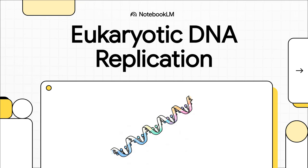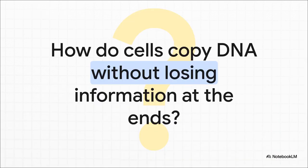In this explainer, we are diving deep into one of the most incredible, most elegant processes in all of biology: eukaryotic DNA replication. If you're prepping for a big exam like the CSIR NET, the little details really matter, and that's exactly what we're going to focus on today. At the heart of this process is a fundamental challenge — our genetic code is a massive 3 billion letter library stored on long linear chromosomes. How does a cell copy that entire library with almost perfect accuracy, and how does it replicate the very ends of those chromosomes without losing critical information every single time it divides? That is the core puzzle we are going to solve together.